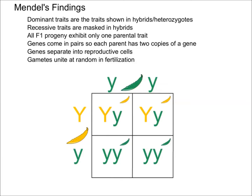Another thing you can see is that genes come in pairs. Each parent has two copies of each gene — one copy here, one copy there. These copies could either be the same or different. If they are the same, the organism is homozygous; if they're different, it's heterozygous.